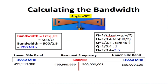Bandwidth equals frequency over Q, so we need to find Q first. Q equals 1 over K times tan(angle divided by 2). K is the phase difference between the elements, with a numeric value between 0.3 and 0.6. For the Bowtie Antenna we use K = 0.4. So Q equals 1 over 0.4 times tan(90 degrees divided by 2). We use 90 degrees because it is the best trade-off angle between impedance and bandwidth for the Bowtie Antenna.